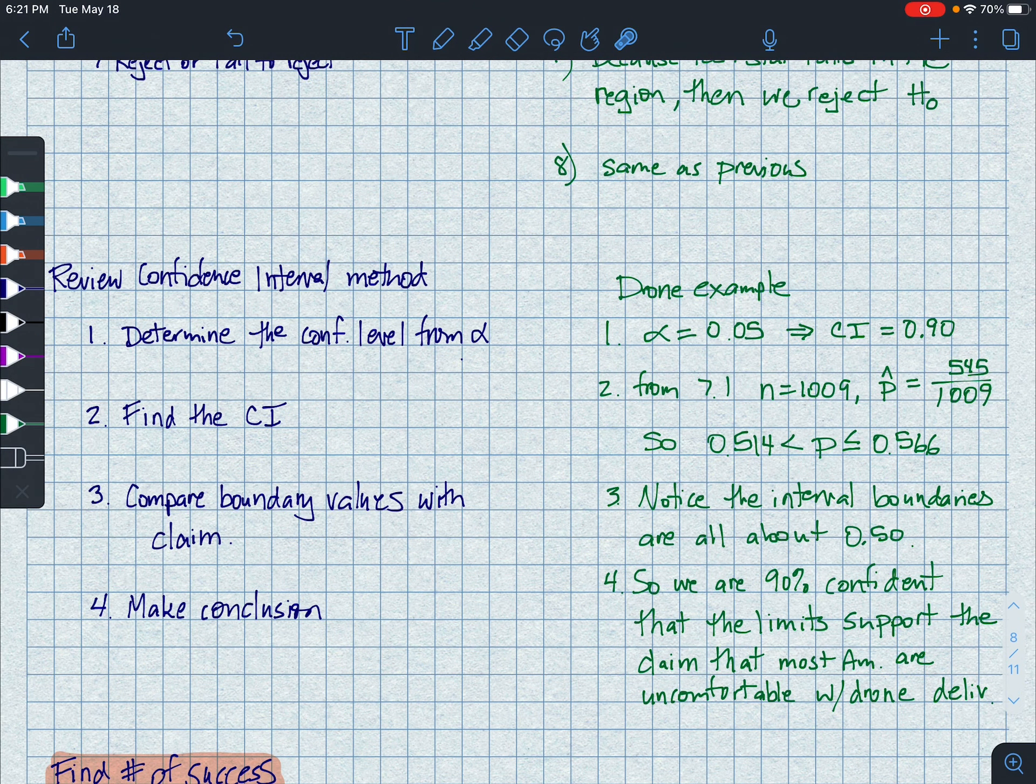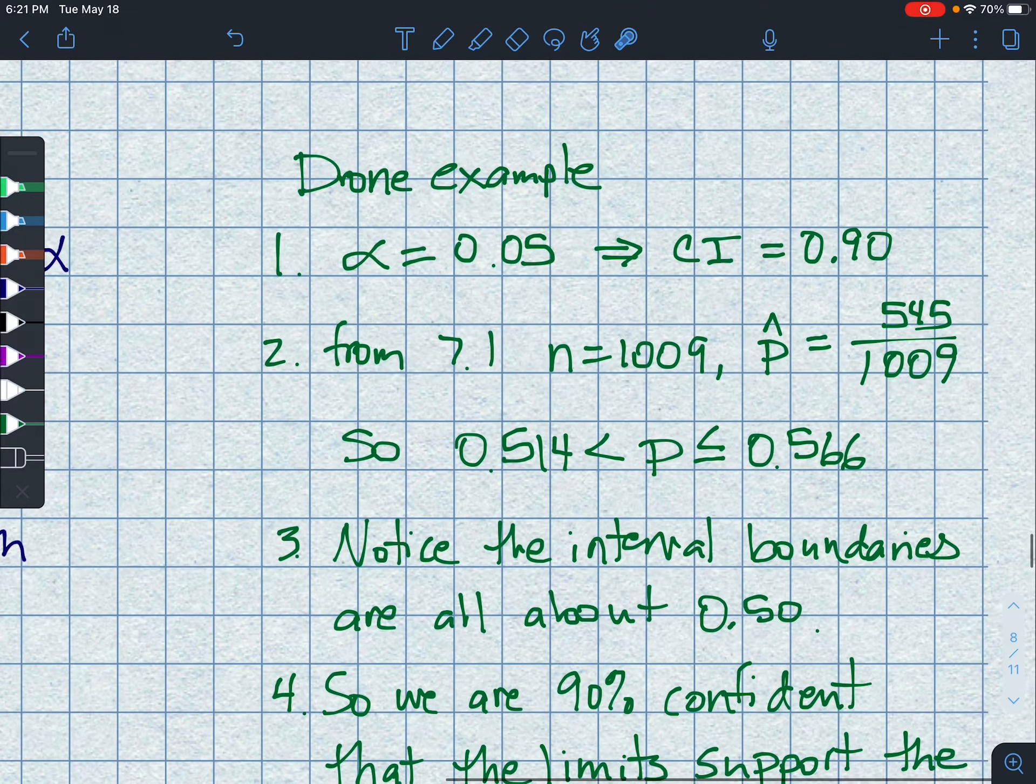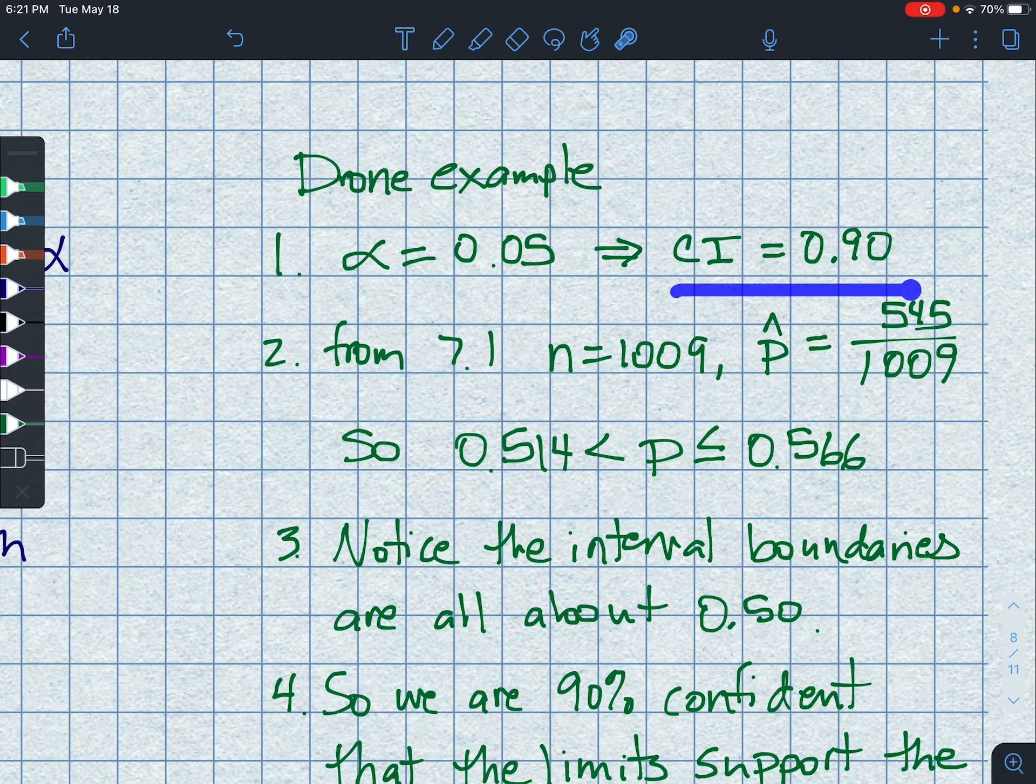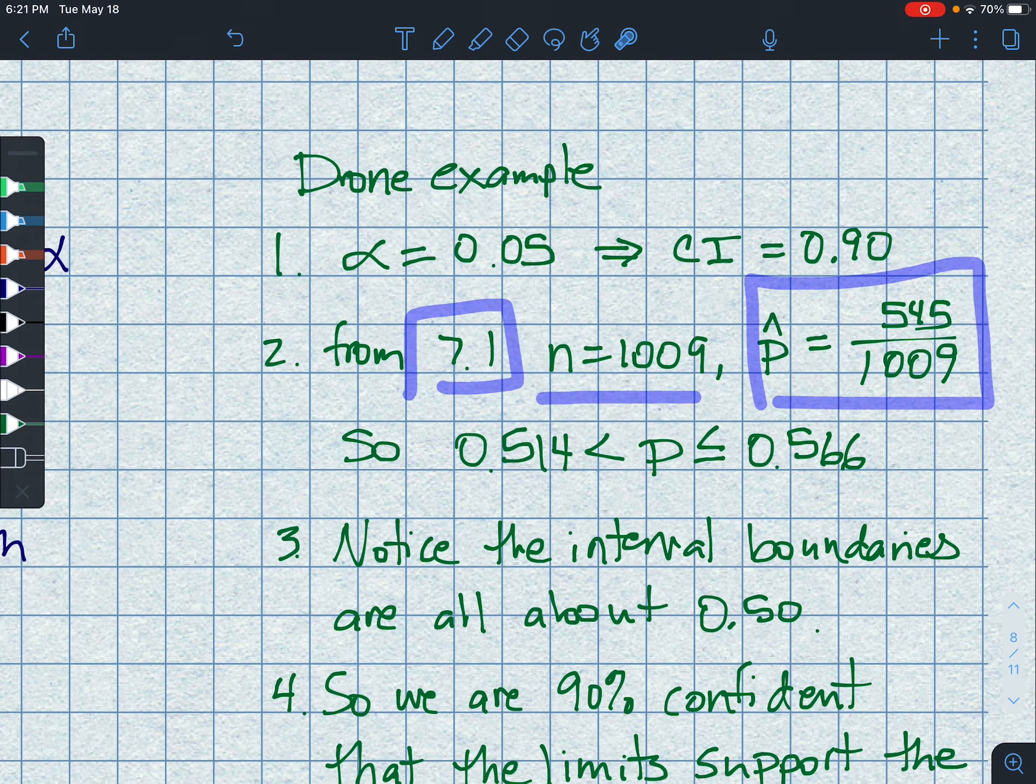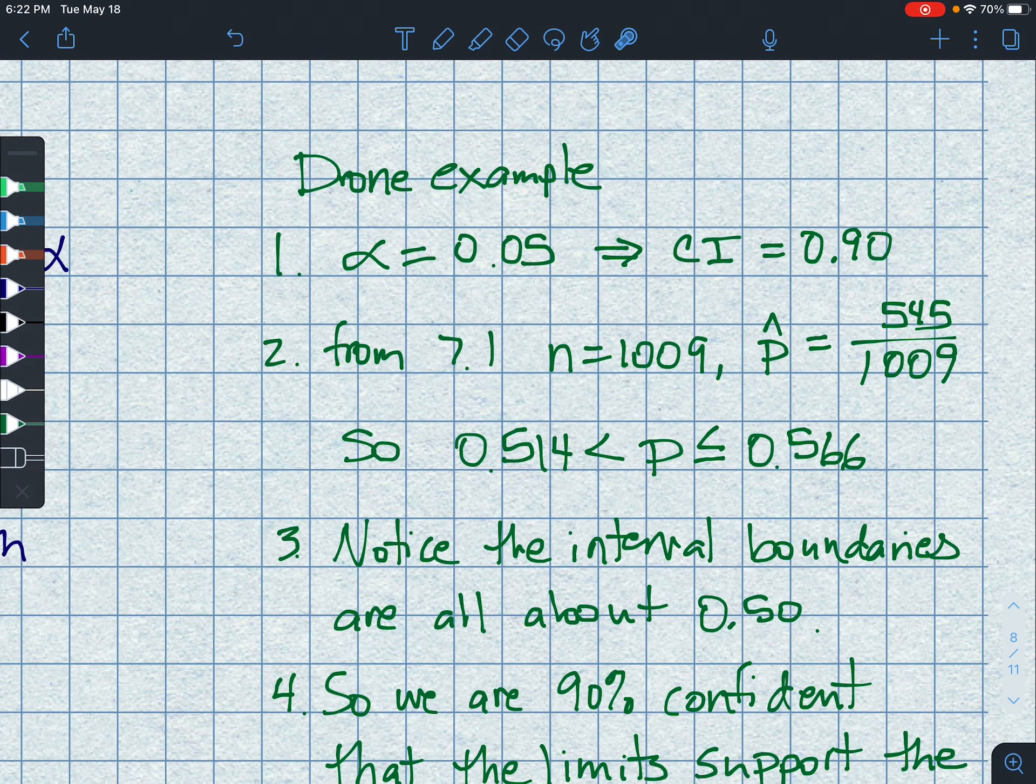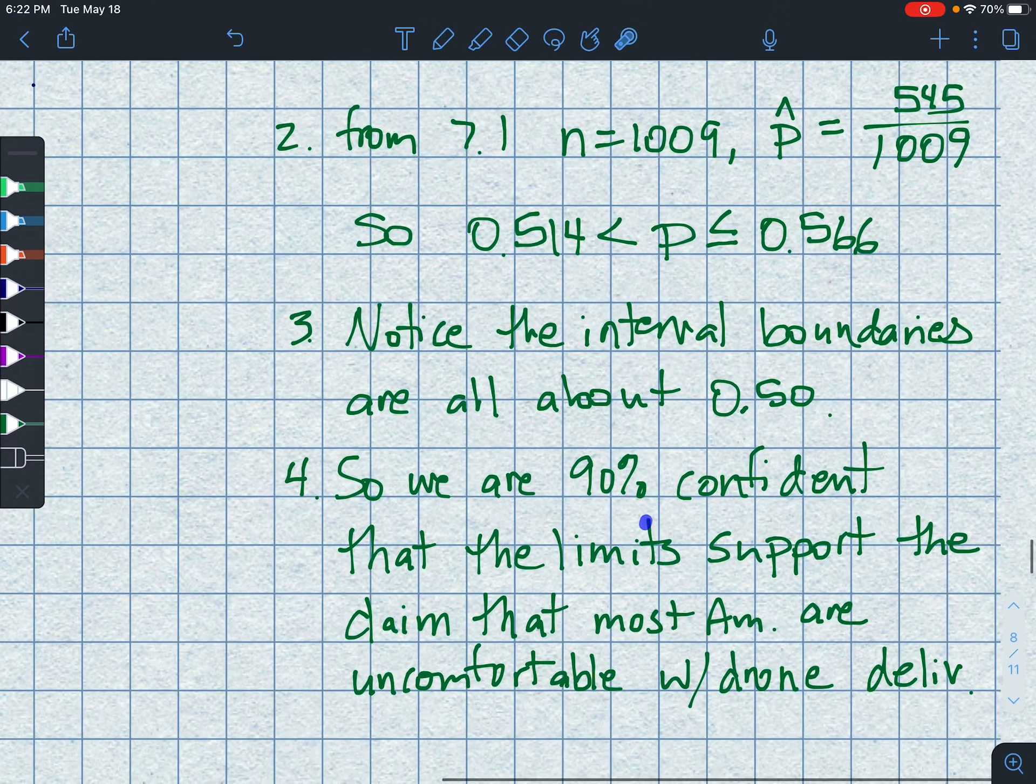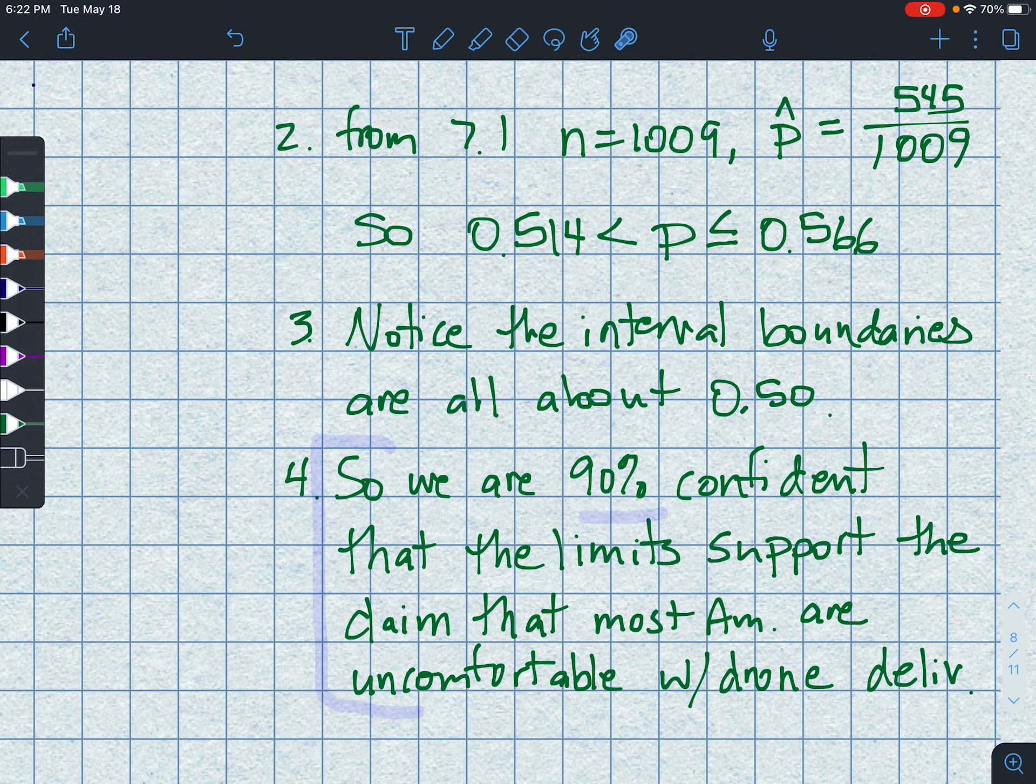Confidence interval method. This kind of confirms the fact that what we did above was right. So we determine our confidence level, 0.05, that gives us a confidence interval of 90%. And then from 7.1, we know that if N is 1,005 and our proportion is this, then our interval is going to be between 0.514 and 0.566. Notice the interval boundaries are all above 50%. So this gives added credence to the fact that, yeah, half of Americans are uncomfortable. We are safe to say that. So hence, we can say with 90% confidence that the limit supports the claim that most Americans are uncomfortable.